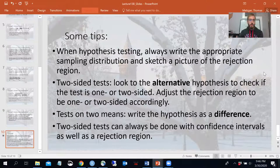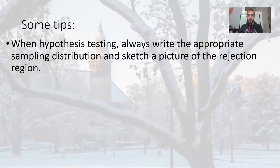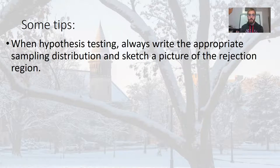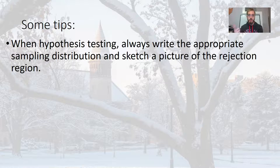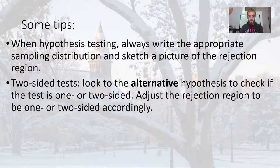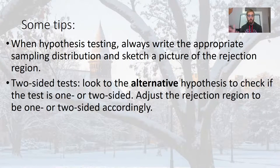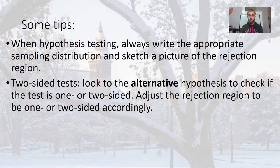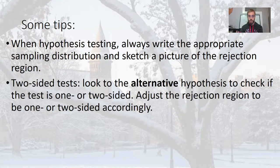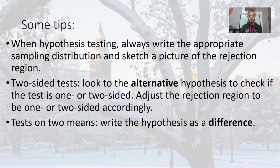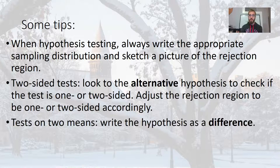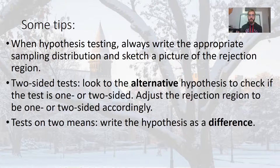So then the last summary points I want to make here is when you are hypothesis testing, whether it's one sided or two sided on one means, on two means, whatever hypothesis test you're doing, write the sampling distribution and sketch a picture of your rejection region. I strongly recommend that. When you're doing two sided tests, look to the alternative to see whether it's one or two sided. You're looking for a less than or greater than sign in a one sided test or an unequal sign in a two sided test. Adjust the rejection region to be one or two sided accordingly. So the only difference in these one and two sided tests is where the rejection region occurs. When you are testing with two mean parameters, the mu D and the mu P, or maybe we have two proportions like we've done before, write the hypothesis as a difference because then you can correctly write the sampling distribution. Because without the sampling distribution, you can't do any of this. So write the hypothesis as a difference. It's one parameter minus another parameter equals zero usually.